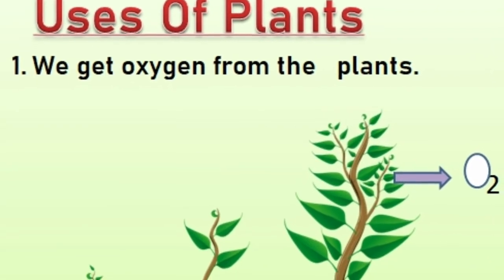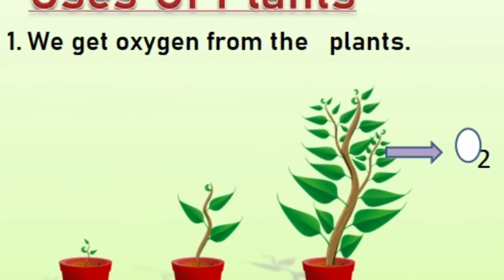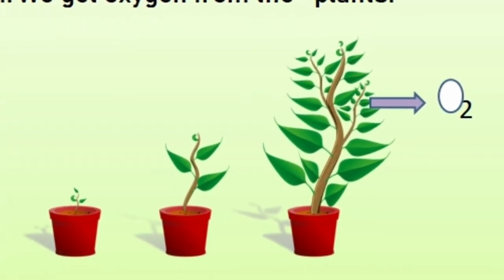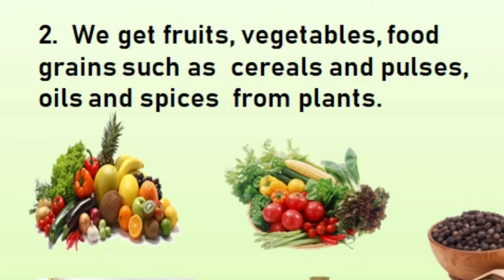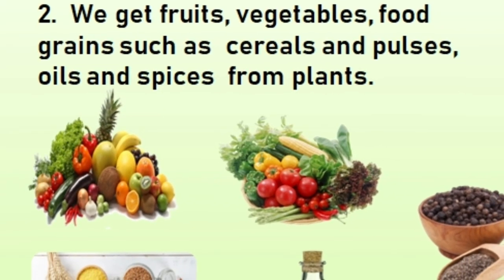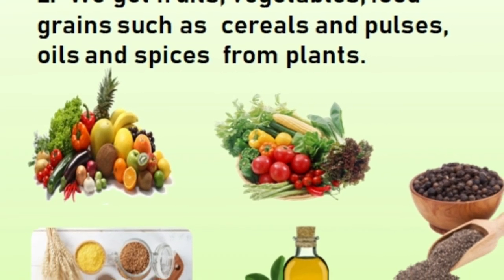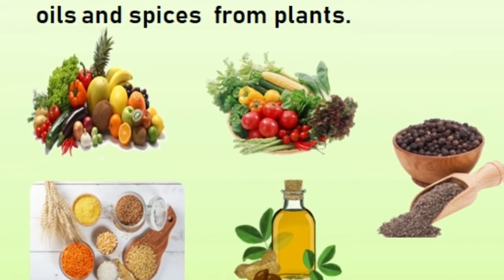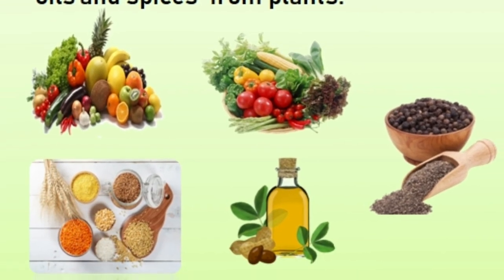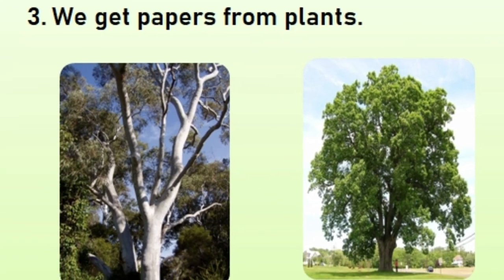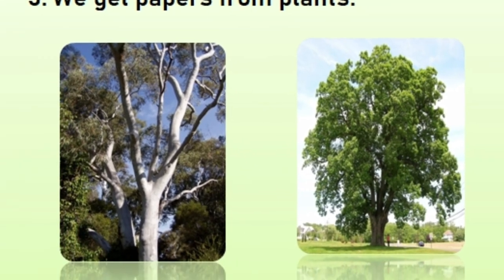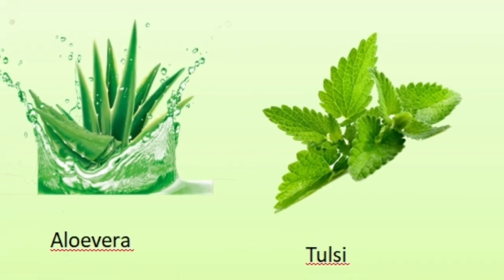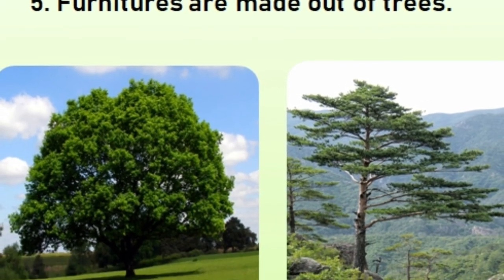Plants are very useful to us. First of all, we get oxygen from plants. Second, we get fruits, vegetables and food grains such as cereals and pulses, oils and spices from plants. Third, we get paper from plants. We also get medicines. Furniture is also made from plants.